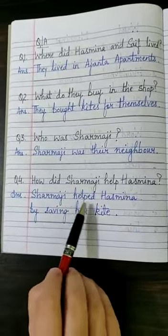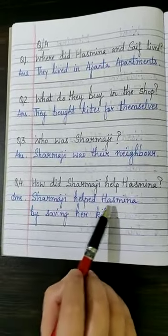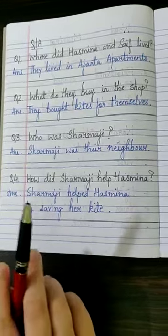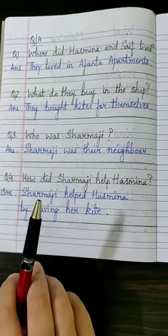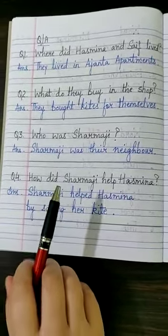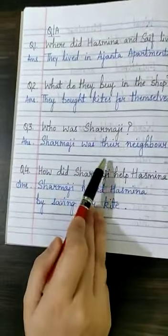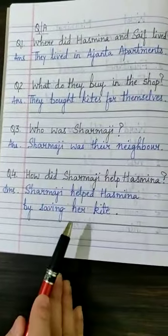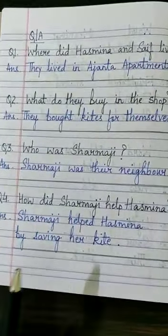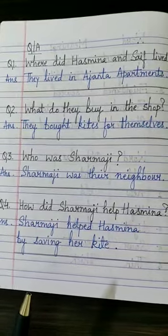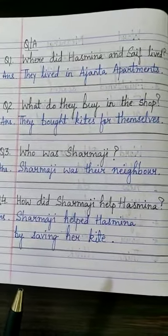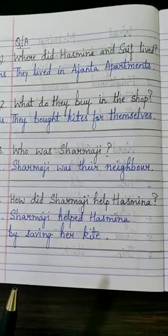Sharma ji helped Hasmina by saving her kite. So children, just do the question answers very neatly and leave a line after every answer. Har answer ke baad line chhodenge, and draw the margins using scale, and learn the chapter. This is the end of the chapter now. Thank you.